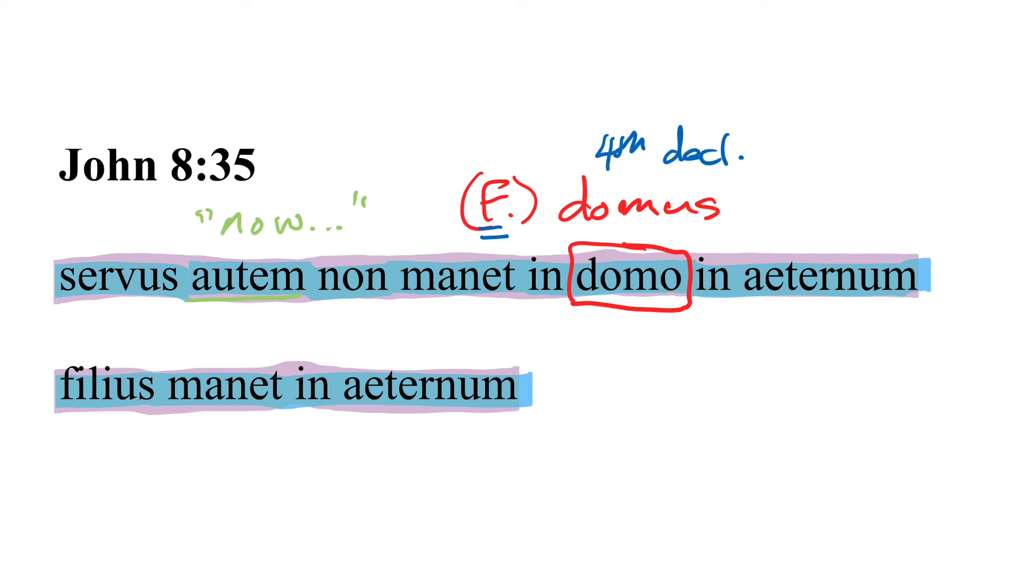Also, you'll see it in the accusative plural as domos on occasion, again following the pattern for the second declension. But most of the rest of the time, it follows the pattern for the fourth declension. So that's just an oddity about this word that you need to know.